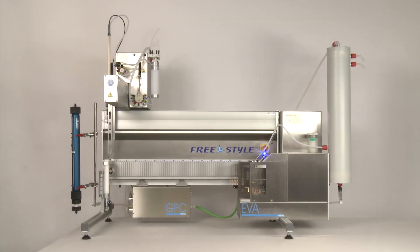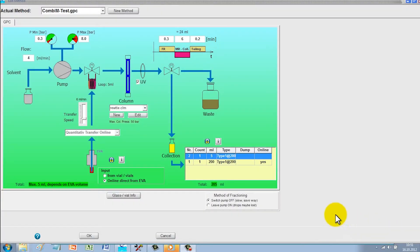This process, which we have just seen in the hardware, is precisely mapped one-to-one in the software. The method screen shows the sequence of a GPC process.